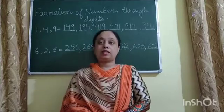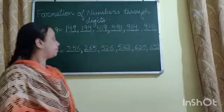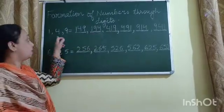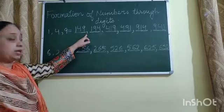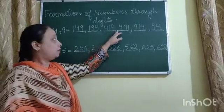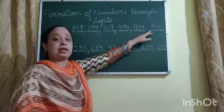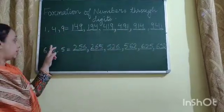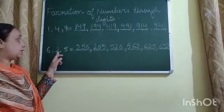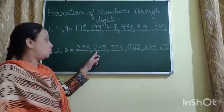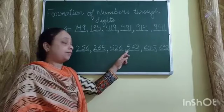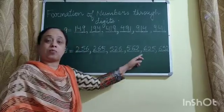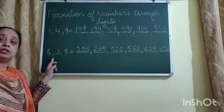One more topic is the formation of numbers through digits. Suppose we have the digits 1, 4 and 9. The possible numbers we can form are 149, 194, 419, 491, 914 and 941 — six numbers from three digits. Another example: from digits 6, 2 and 5 we can form 256, 265, 526, 562, 625 and 652.